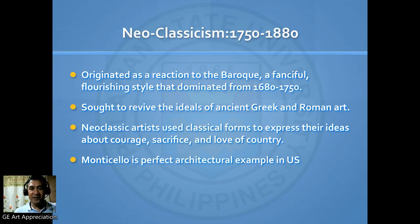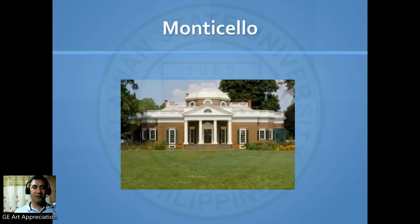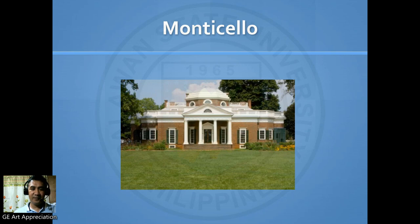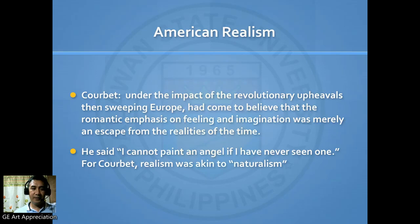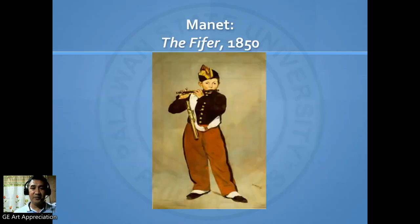Let's take a look at Neoclassicism, from 1750 to 1880. It originated as a reaction to the Baroque — a fanciful, flourishing style that dominated from 1680 to 1750. It sought to revive the ideals of ancient Greek and Roman art. Monticello is a perfect architectural example in the U.S. We also have Gustave Courbet's The Stone Breakers in 1849, and Manet's The Fifer in 1850.